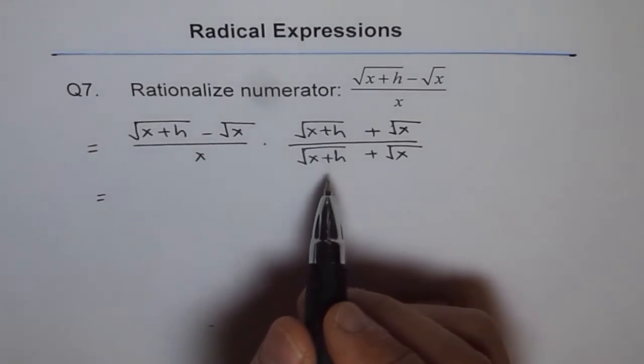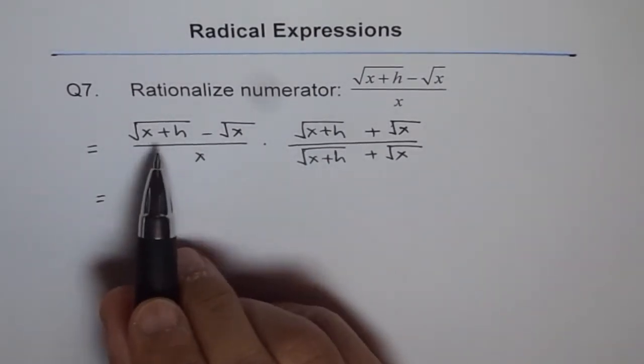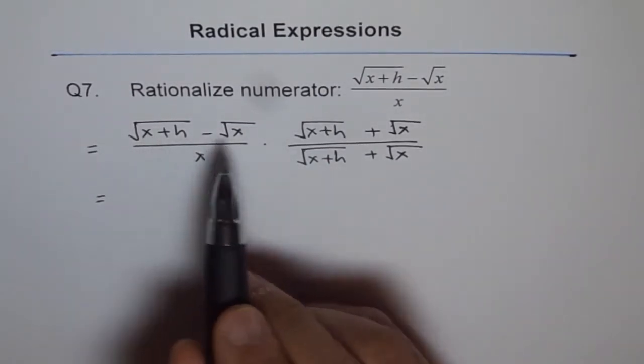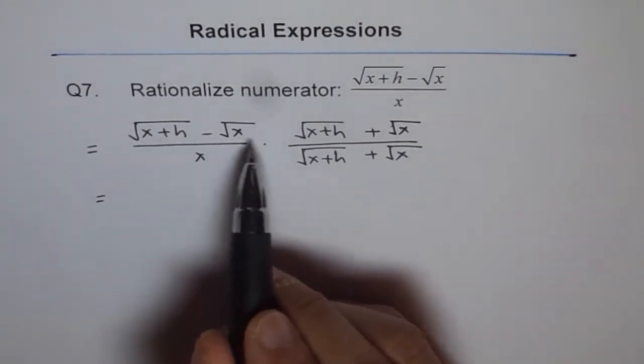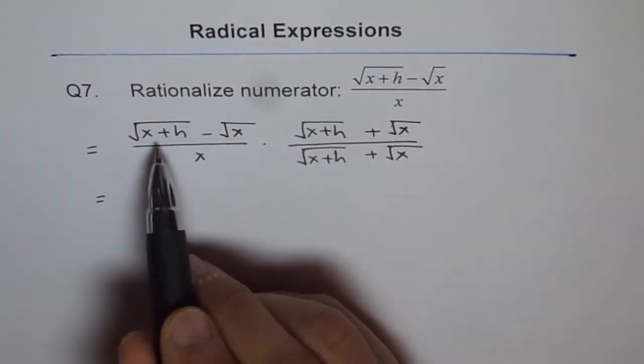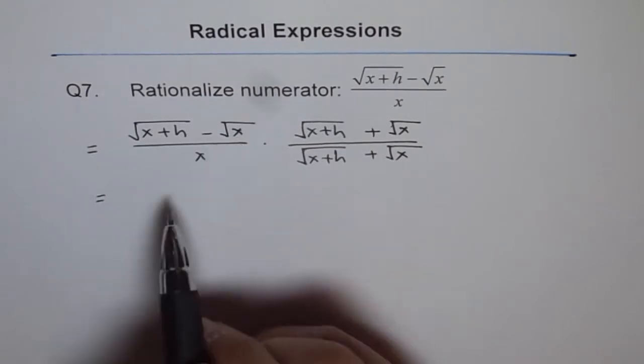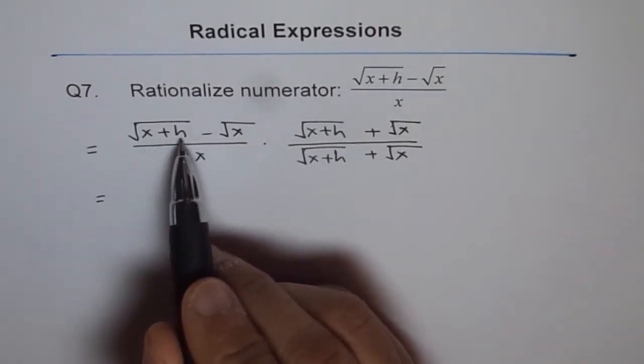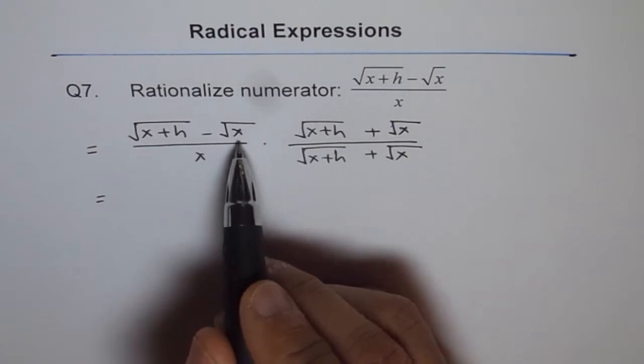By doing rationalization, what do we do? We get rid of the square root from the numerator. It is like a minus b times a plus b, which gives us a squared minus b squared. A is square root of x plus h and b is square root of x for us.